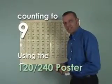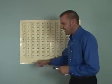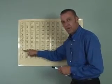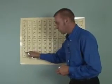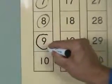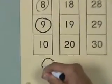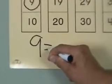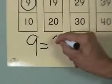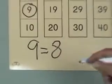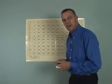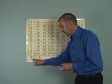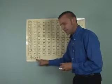Boys and girls, remember what number we had yesterday? We have the number 8. We are going to add one more to 8. What do we get when we add 8 plus 1? Nine. Now we have nine. What was our number yesterday? It was eight. How many did we add to that number? We added one more.